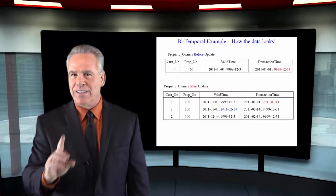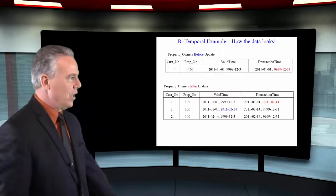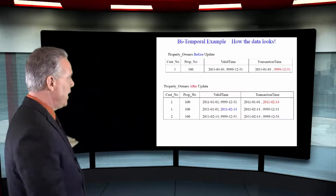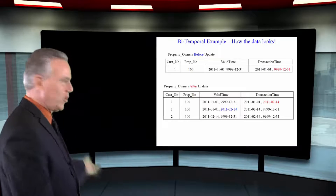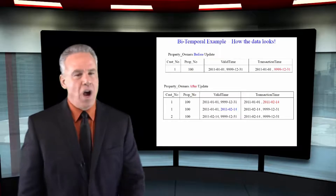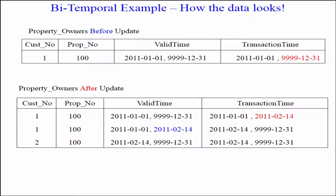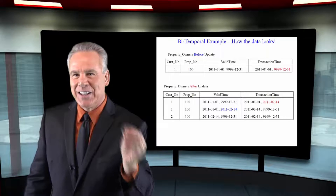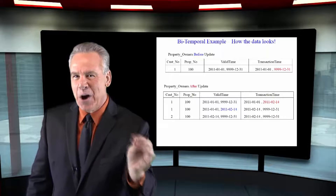And you'll see this later. We finally come to the third row, which says customer two owns property 100. They bought this on February 14th. They're going to own it forever. It actually has the transaction time, even though the actual date's not there. And again, they own it forever, which means it's still open.